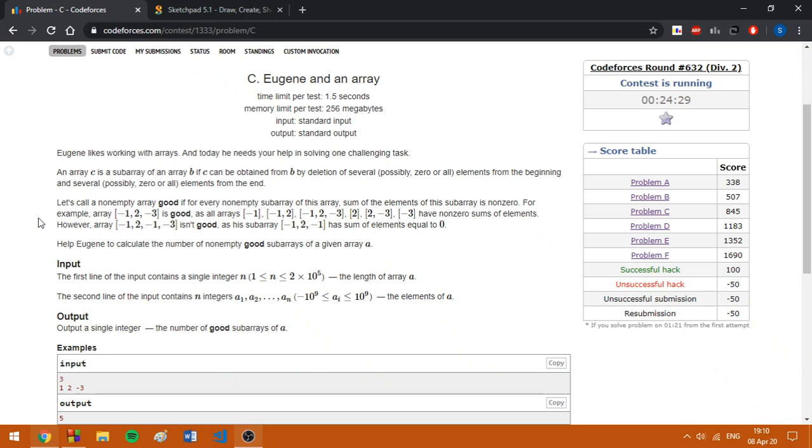In this problem, I need to find the number of good non-empty subarrays. Basically, a good non-empty subarray is a subarray such that its sum is different from zero and the sum of each subarray from that subarray is also different from zero.